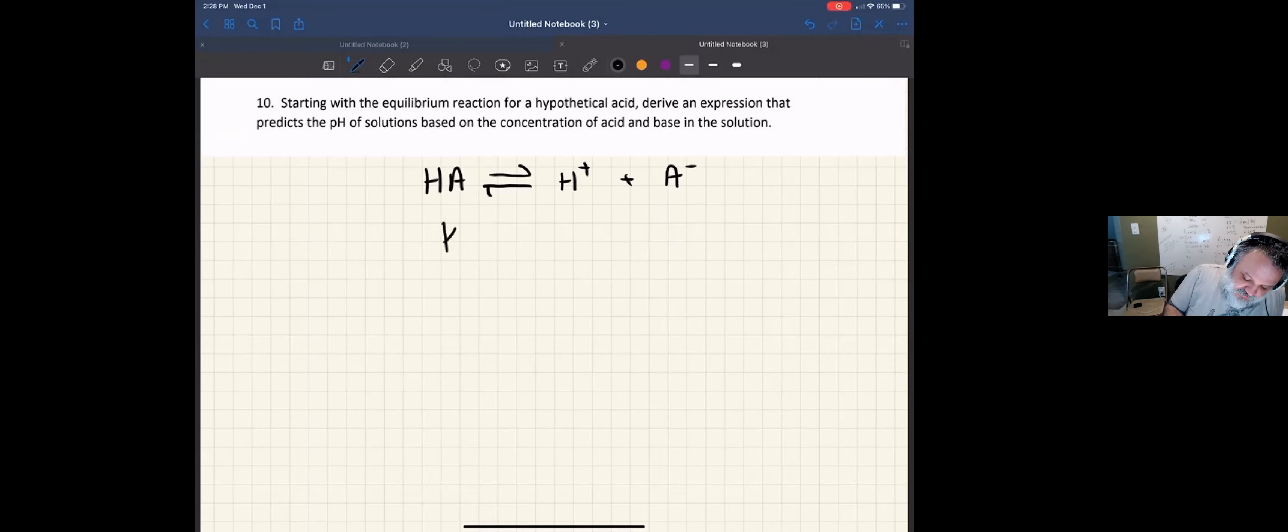What it wants you to do is take the equilibrium expression, and the equilibrium expression is Ka, and that equals H plus times A minus, and that's over HA.